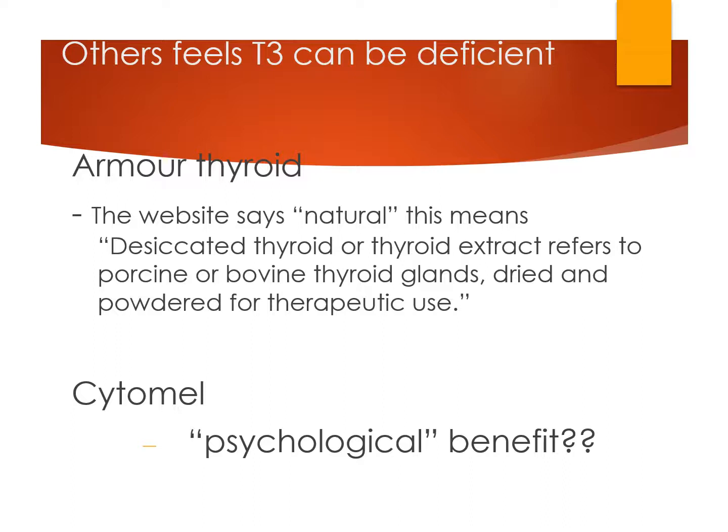Those who feel T3 can be deficient will usually use Cytomel, which is a T3 analog. There is some evidence people get better, although there really isn't a huge difference between that and placebo, so one theory is that it's a psychological benefit. Other people want to use Armour Thyroid. A lot of naturopaths use Armour Thyroid because it is more natural. Some people feel that it comes from pigs and cows, which is less desirable than synthetically made hormone, and that patients may develop allergies or responses to pig or beef glands. Though as noted, we eat pigs and beef, so ingesting it in other ways is probably not irrational.